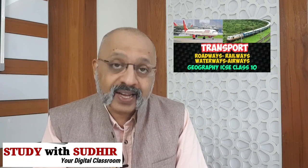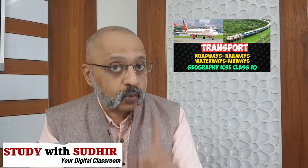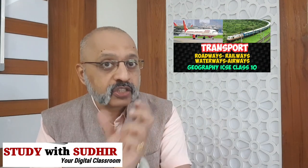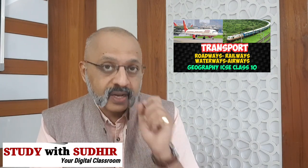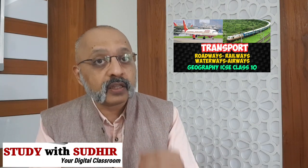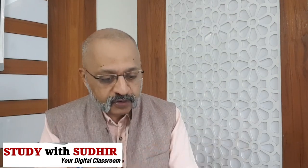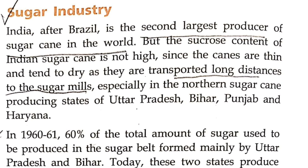India (Bharat) is the second largest producer of sugarcane in the world after Brazil. Note the distinction between sugar and sugarcane (ganna and chini). In terms of sugarcane production, India ranks second in the world. However, the sucrose content — the basic content of sugar — is not very high in Indian sugarcane, because the cane grown in India is thin in nature, not very thick.